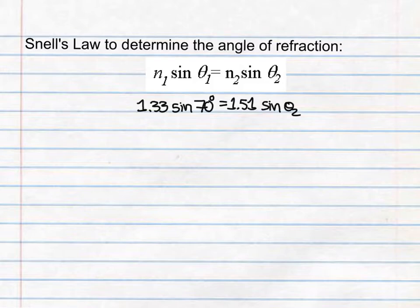Here we have the index of refraction for water, or 1.33, times the sine of the angle of incidence, 70 degrees, will equal the index of refraction for glass, 1.51, times the sine of the angle of refraction, which we don't know. Hit pause and see if you can solve for theta 2, noting that you'll have to do an inverse sine function.